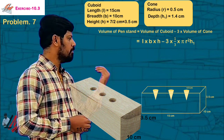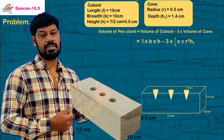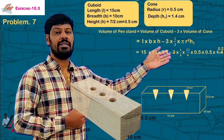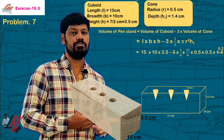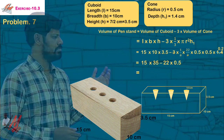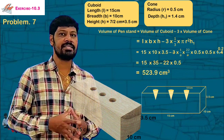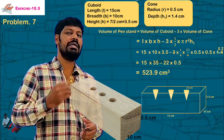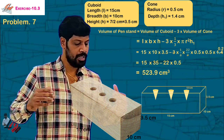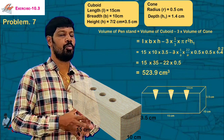Now we substitute the values: 15 × 10 × 7/2 minus 22/7 × 1/2 × 1/2 × 1.4. After simple calculation we get the final answer. I hope you all have a good understanding of this problem. Bye bye.